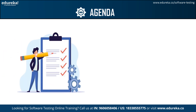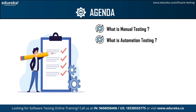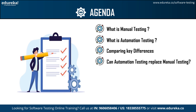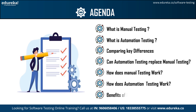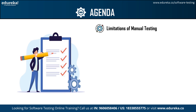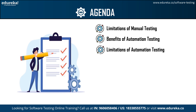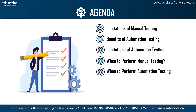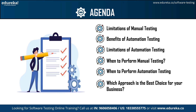Let us take a quick look at the agenda of today's session. First, we will look at the two types of testing: what is manual testing and what is automation testing. Following that, we will go through the key differences between automation and manual testing, then discuss whether automation testing can replace manual testing, how each works, their benefits and limitations, when to perform each, and finally which approach is best for your business, winding up with a summary.